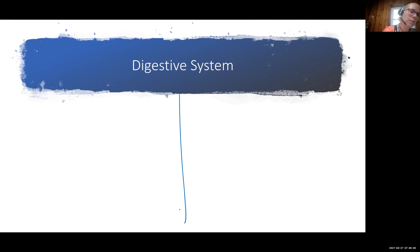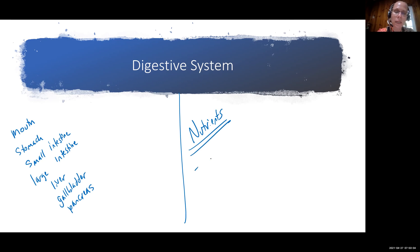Digestive system. Mouth, stomach, small intestine, large intestine, and the liver is part of this system. The gallbladder is part of this system. So we have several what we call accessory organs as well. Pancreas is an organ that we mentioned as part of endocrine, but it's important here as well. And here I'm just going to say nutrients. So we're going to obtain, we're going to digest, and we're going to absorb nutrients into the body.